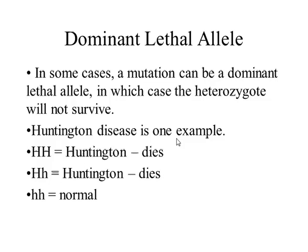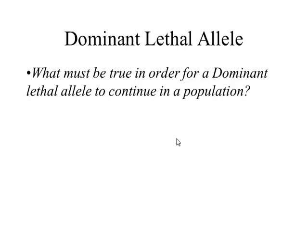Another example we have is dominant lethal. Sometimes just having one copy of an allele causes an organism to die. Many of you may have heard about Huntington's disease — this is a very sad disease where people die of slow, painful neurological death. These people have one copy of the allele inherited from either parent. There's a place in italics for you to write: with this dominant lethal allele, what has to be true in order for it to continue in a population?